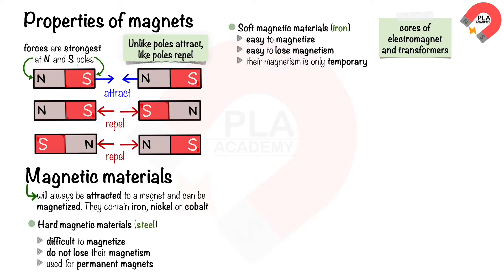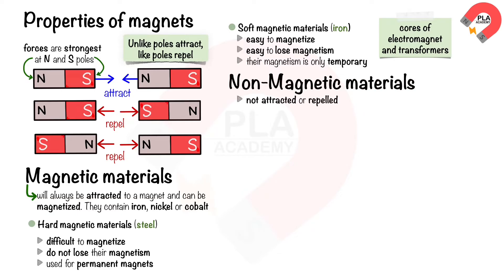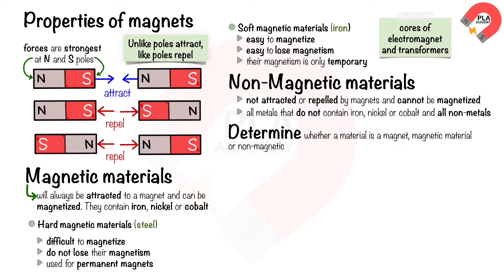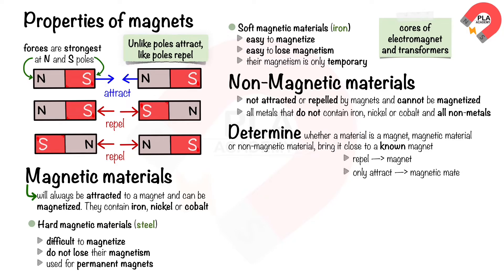Soft magnetic materials such as iron are relatively easy to magnetize and easy to lose magnetism, so their magnetism is only temporary. They are used in the cores of electromagnets and transformers because their magnetic effect can be switched on and off or reversed easily. Non-magnetic materials are not attracted or repelled by magnets and cannot be magnetized; they include all metals that do not contain iron, nickel, or cobalt, and all non-metals. To determine whether a material is a magnet, a magnetic material, or a non-magnetic material, bring it close to a known magnet. If it can be repelled by the known magnet, then it is a magnet. If it can only be attracted and not repelled, then it is a magnetic material.